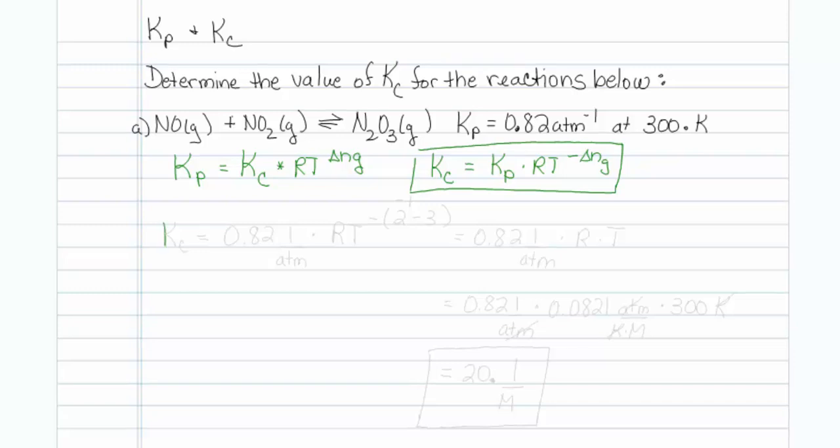For this first one, Kc equals Kp, that's 0.82 in units of one over atmospheres, or atmospheres to the minus one. I really need to figure out delta NG for this reaction because it's going to be RT to the minus delta NG. I have two moles of product gas and three moles of reactant gas. So this is essentially going to be 0.82, one over atmospheres, times RT to the minus minus one, which is plus one, so just times RT.